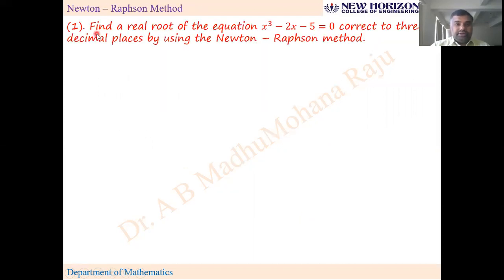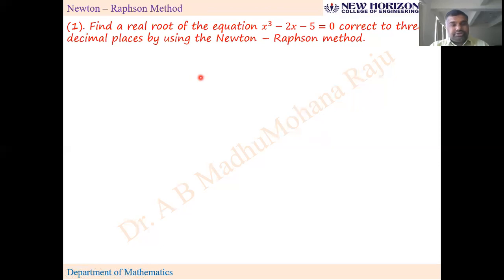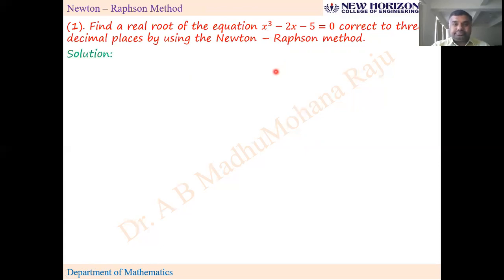Find a real root of the equation x³ - 2x - 5 = 0, corrected to three decimal places, by using Newton-Raphson method. The reason we study Newton-Raphson method is it converges faster than the regular false position method. I took the same problem — there you got a root in the eighth or ninth stage, but here we'll get it much faster.